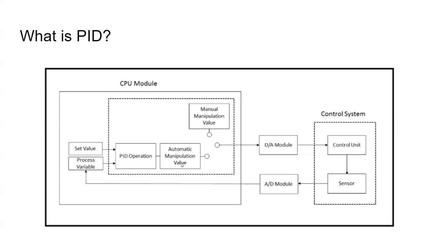Where does that manipulation value go? It goes to an analog card — a DA module, which means it's turning a digital binary value, like 16,000, into an analog response such as 10 volts, 5 volts, or 20 milliamps. That value is sent to the control system, which interprets it and operates accordingly. Maybe we generate 7.5 volts, and then the VFD or whatever control system interprets that output and generates its appropriate response.